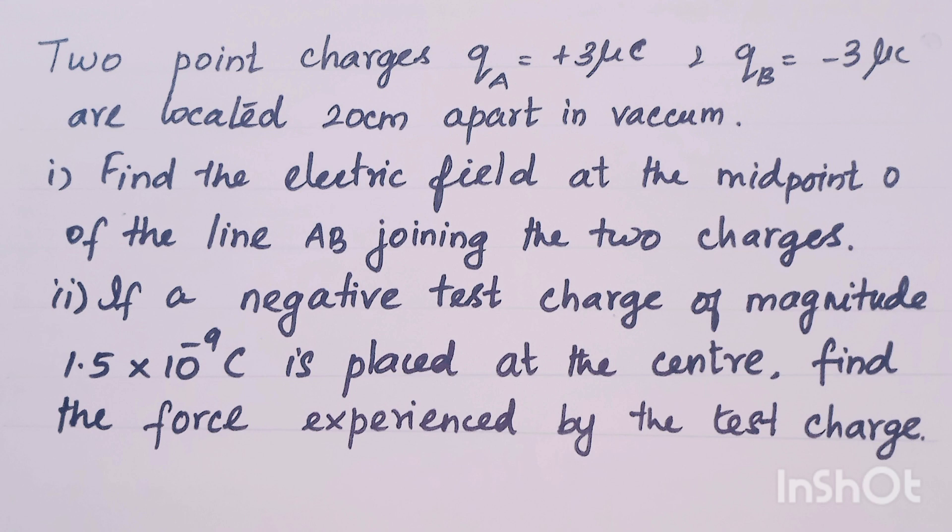We will find the electric field at the midpoint. The field is a vector — this charge is positive, so the fields at the midpoint will add. At the center point, we will consider a negative charge.